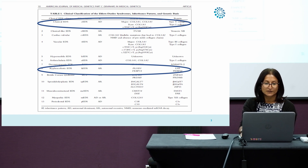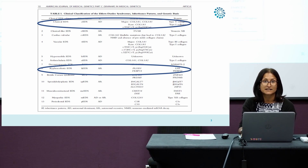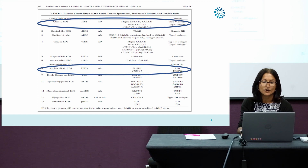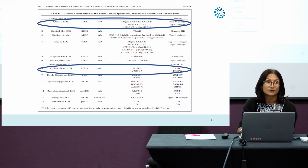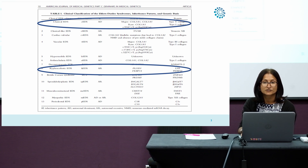I'm going to focus today on two types of EDS: classical EDS and kyphoscoliotic EDS, which are the two that are most known about at the moment in the literature to be associated with arterial fragility.